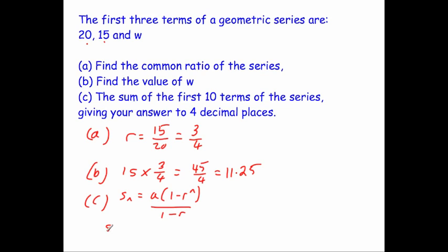So for S10, S10 will equal A, which is the first term, 20, brackets, 1 minus R. R is 3 quarters. I'm just going to put a decimal in there, just to keep safe space, 0.75, to the part of N, which is 10, 10 terms, close brackets, all divided by 1 minus R. R is the common ratio again, which is 0.75. When we work that out on your calculator, we will get the answer.